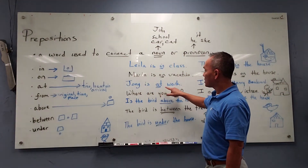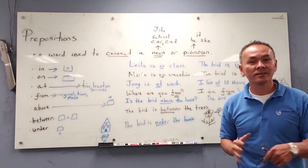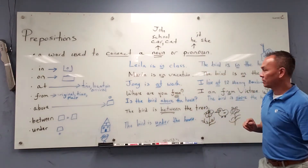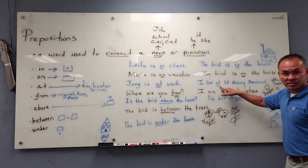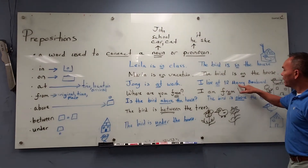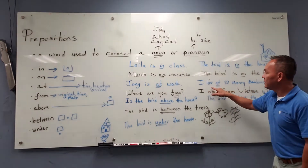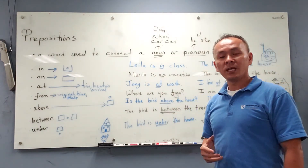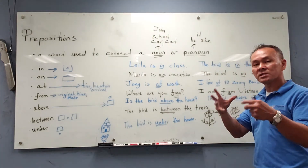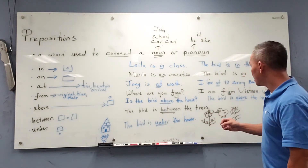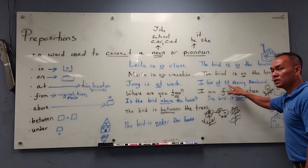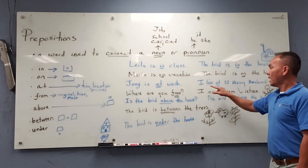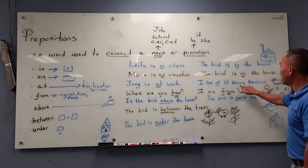Johnny is at work. Where is Johnny? Johnny is at work. I live at 12 Henry Boulevard. When someone asks you where do you live and you want to be very specific, very exact — you want to give the street and the street number — you're going to use at. I live at 12 Henry Boulevard.